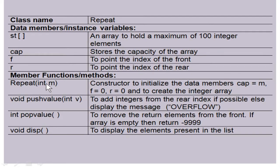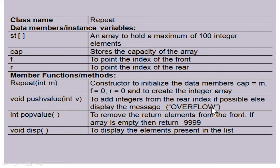Then we have some member functions. The first function is the constructor 'repeat', which is a parameterized constructor with argument M, used to initialize the data member cap equal to M, with default values F equal to 0 and R equal to 0, and also to create the integer array. Then there is a method called 'void push value' which is used to insert the value given as parameter V, to add integers from the rear index if possible, else display the message overflow.